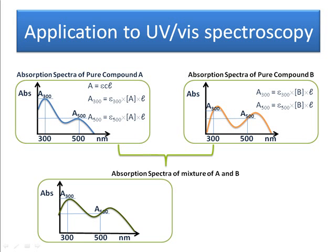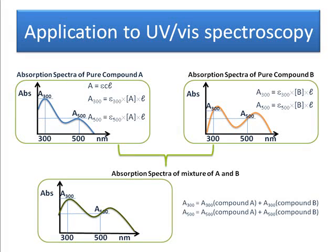But now if I have a mixture of A and B where I don't know the concentration of A and I don't know the concentration of B, I can use simultaneous equations to find out the concentration of A and B in this mixture. Because assuming A and B don't interact in any way, we can say that the absorption at 300 is equal to the absorption due to A at 300 plus the absorption due to B at 300.